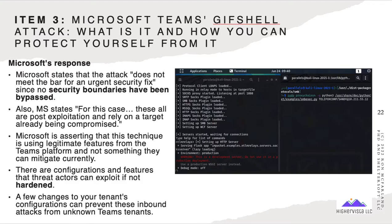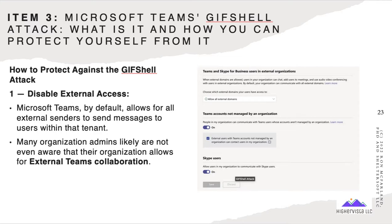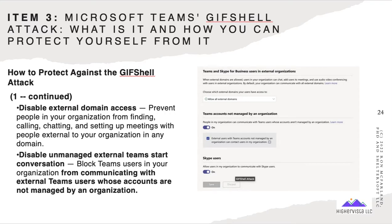Microsoft has basically said this is not a high priority on their list and that it should be resolved by hardening a system. Here's what they suggest: disable external access in Teams — and personally, I think Microsoft should have it disabled right out of the box, with users enabling it only if needed. Also, disable external domain access to prevent your organization from reaching out to external parties, and disable unmanaged external Teams conversations to block your Teams users from communicating with external Teams users.